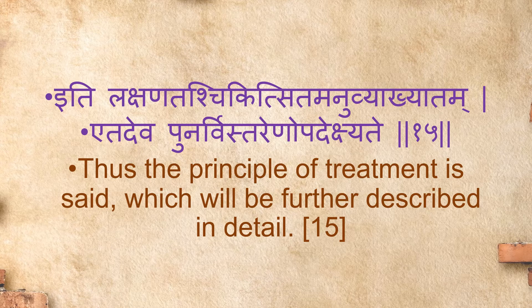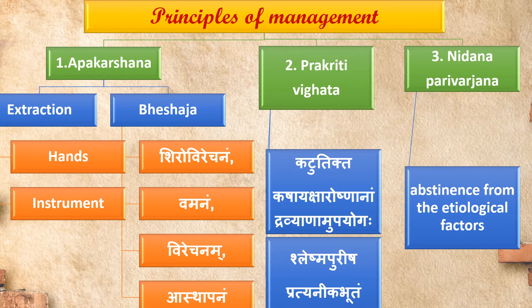Thus the principle of treatment is said, which will be further described in detail. Treatment can be broadly classified into three: Abakarshana, Prakriti Vighadah, and Nidhan Parivarchan. Abakarshana includes extraction by hands or instruments, and Beshicha using Shirovirechanam, Vamanam, Virechanam, and Asthabanam. For Prakriti Vighadah, drugs that are Tikta, Kashaya, Kshara, and Ushna are used, also Sleshma and Puresha Prathyaneeka. Nidhan Parivarchan means abstinence from the etiological factor.